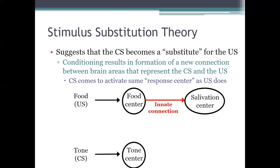Pavlov further believed that some of these brain centers have pre-existing innate connections between them. For example, there is a natural pre-existing excitatory connection in the dog's brain between its food center and its salivation center. That's why food automatically makes the dog salivate even before any conditioning has occurred. That innate connection explains why food is an unconditioned stimulus that elicits salivation as an unconditioned response. No such connection exists between the dog's tone center and its salivation center, which is why the tone is initially neutral and doesn't elicit salivation.